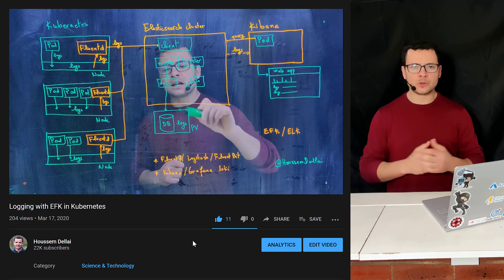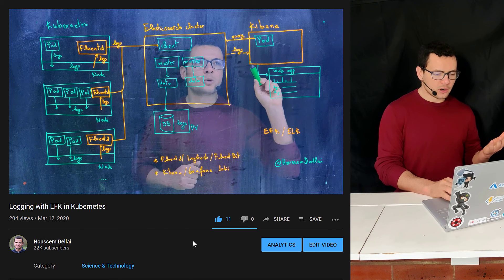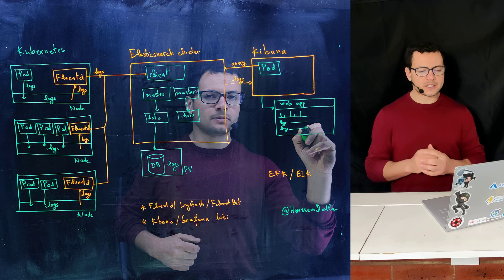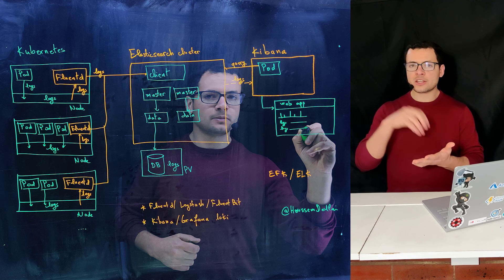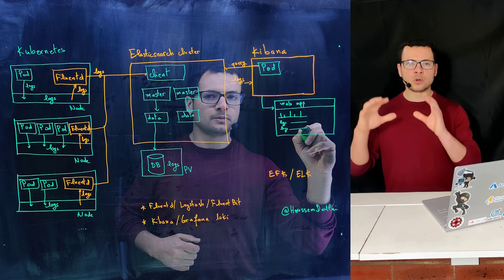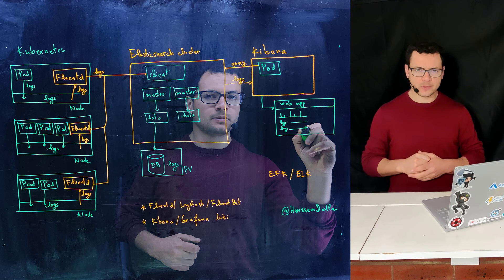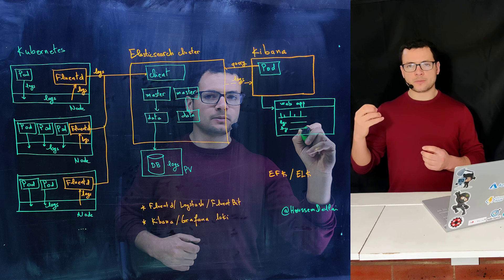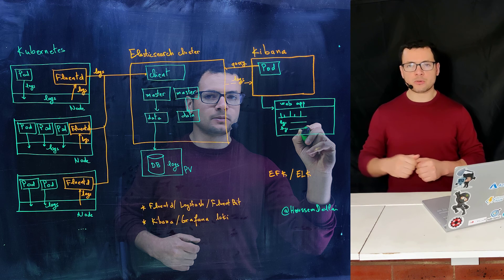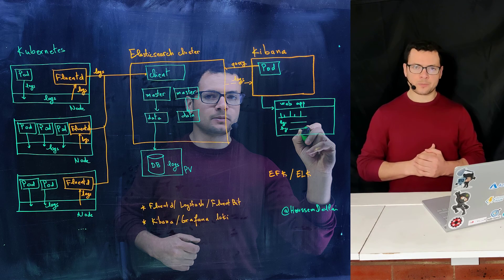In one of my previous videos on YouTube I have already explained how those three components work together. Mainly, Fluentd is the first component that should be installed in each node of the cluster so it can collect the logs, then it sends those logs to Elasticsearch, which saves them in its database. Then Kibana, the third component, queries Elasticsearch to get certain logs and visualizes them in a nice dashboard where we can filter on logs coming from a certain pod or certain nodes.